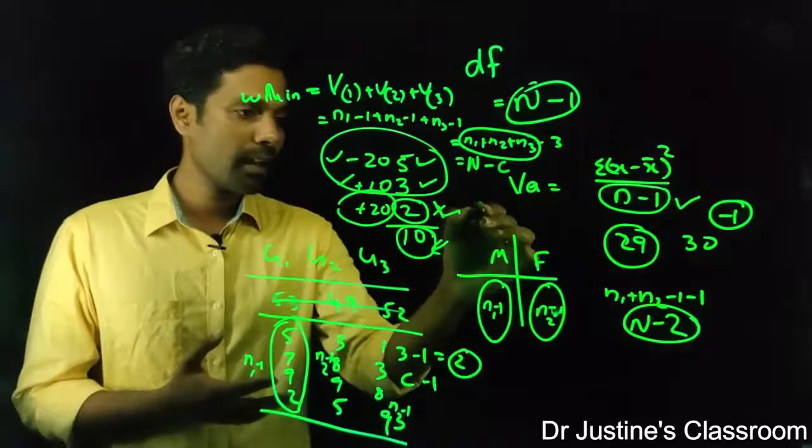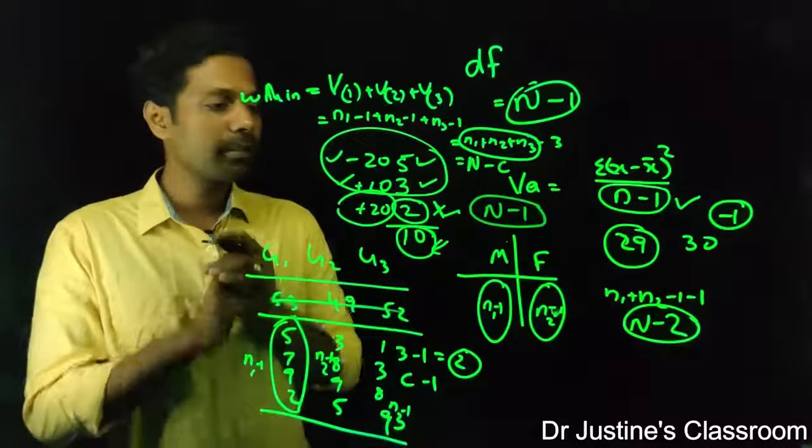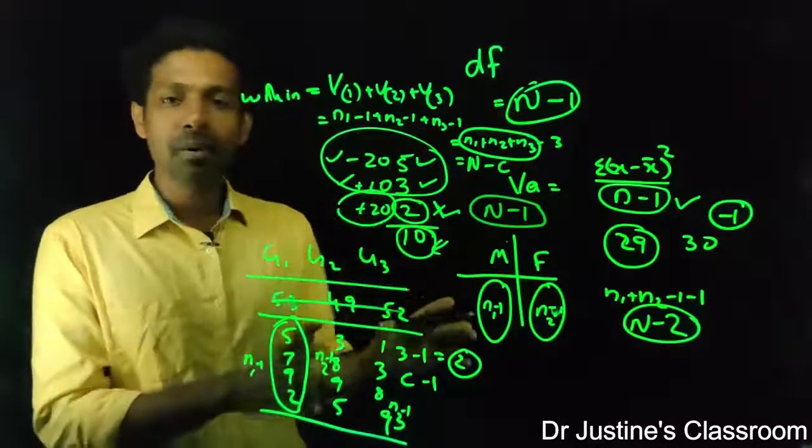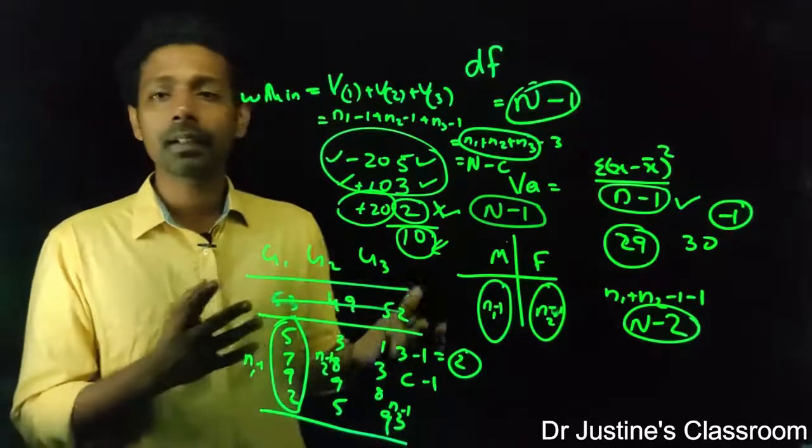So degree of freedom is basically the number of observations minus one most often.